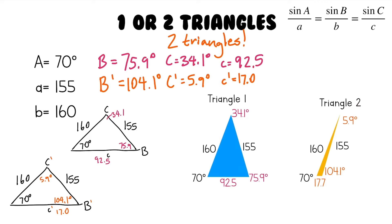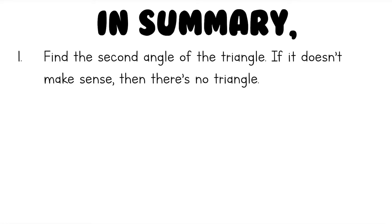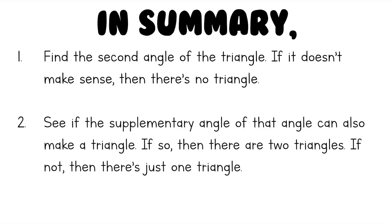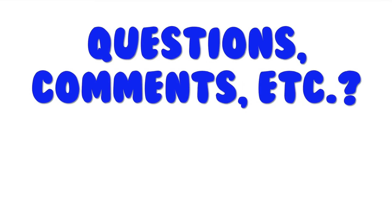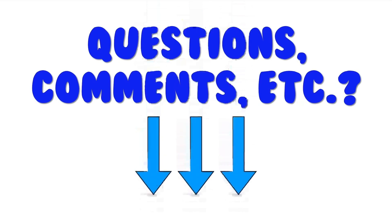We found both triangles without having to memorize anything, except that these two angles are supplementary. In summary: step one is to find the second angle using the law of sines — if it doesn't make sense (triangle exceeds 180 degrees, or you'd need inverse sine of something greater than 1), then there's no triangle. Step two is to check if the supplementary angle can also make a triangle — if so, there are two triangles; if not, just one. Step three is to solve for the rest using the law of sines. We tackled the ambiguous case without memorizing anything at all.